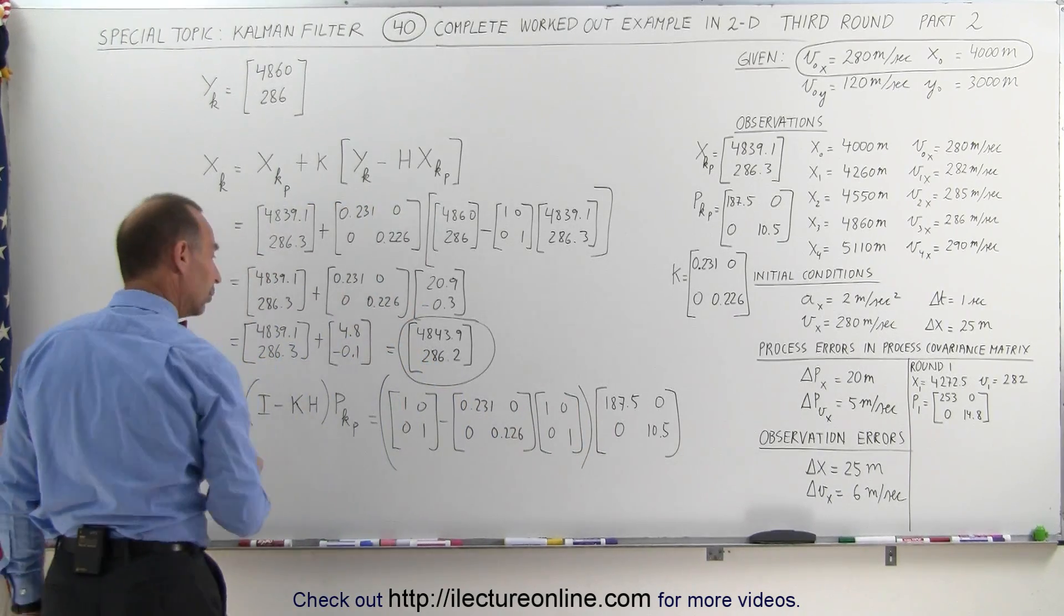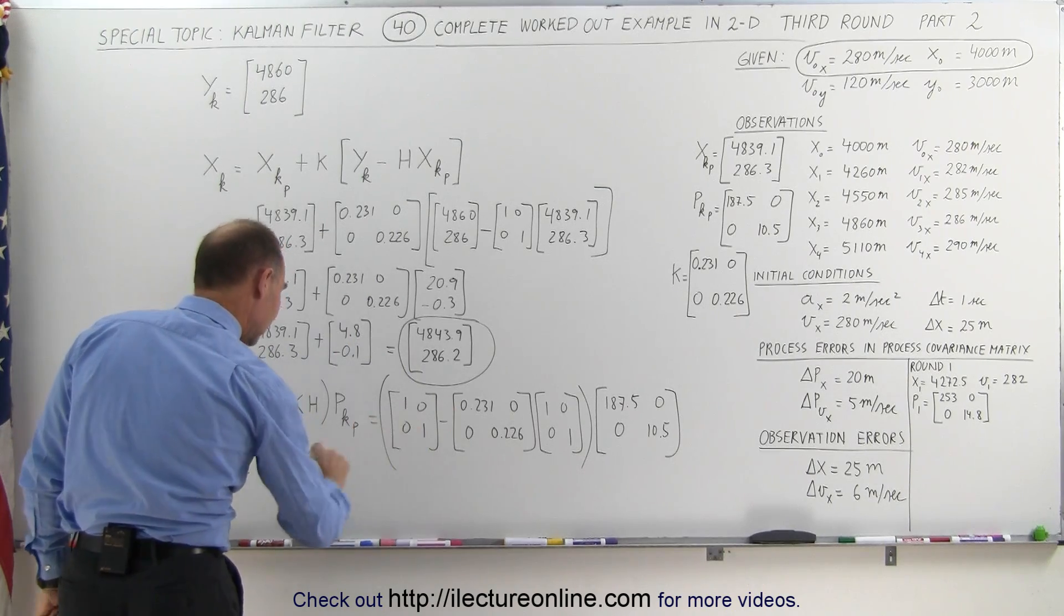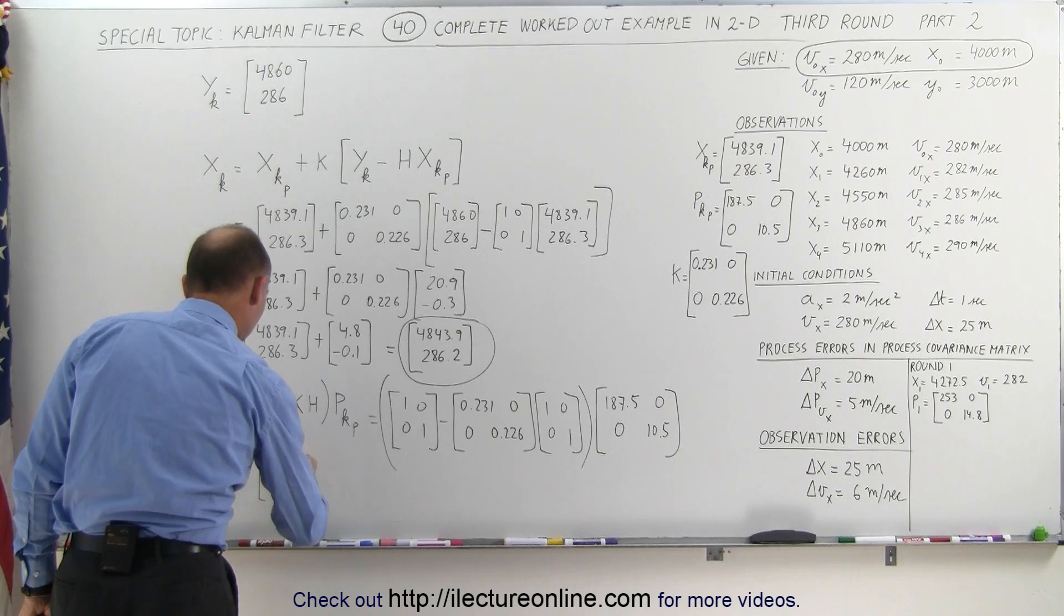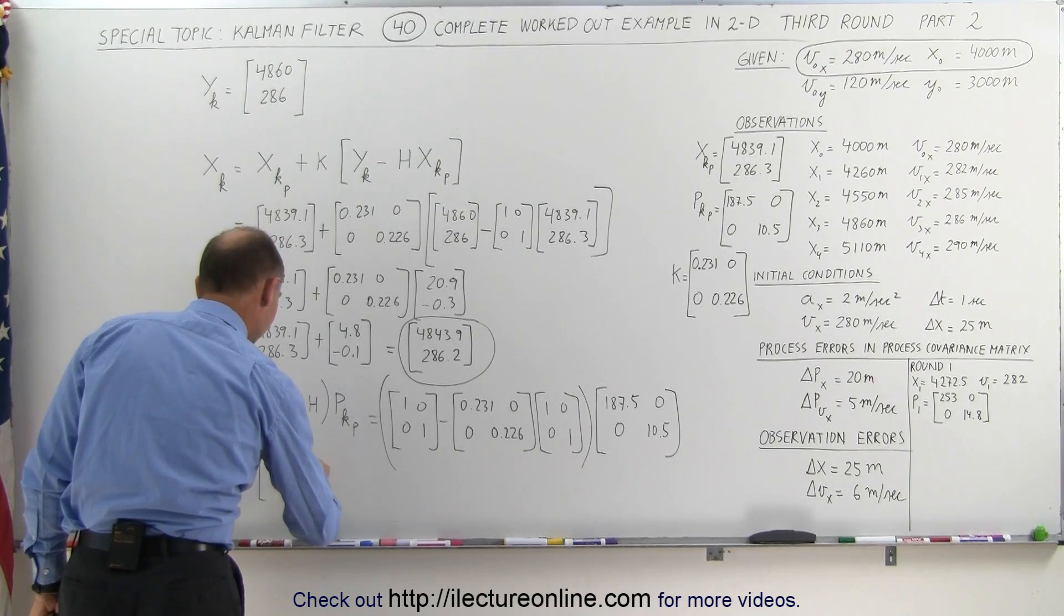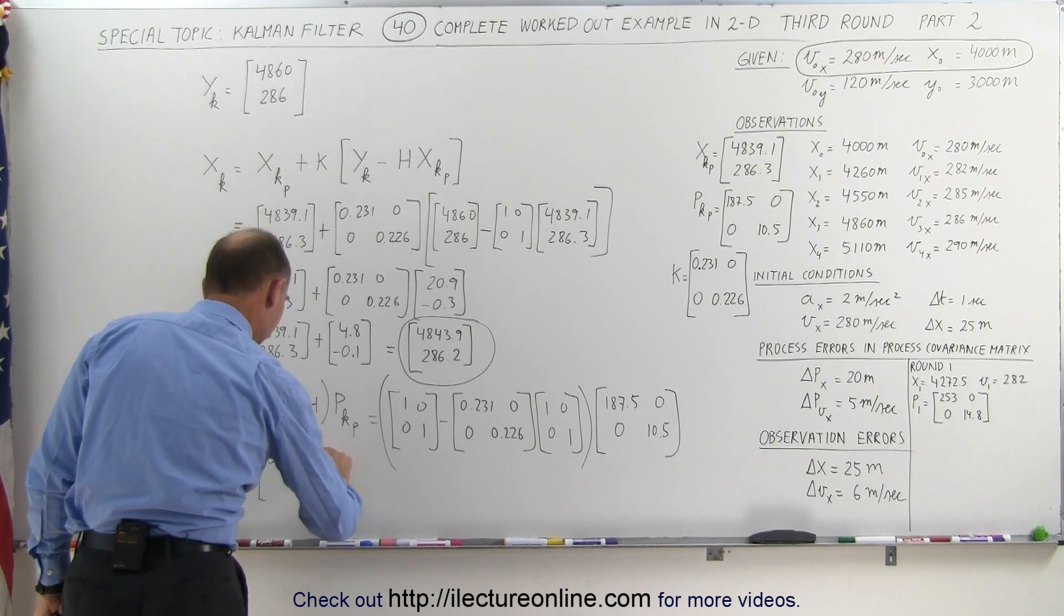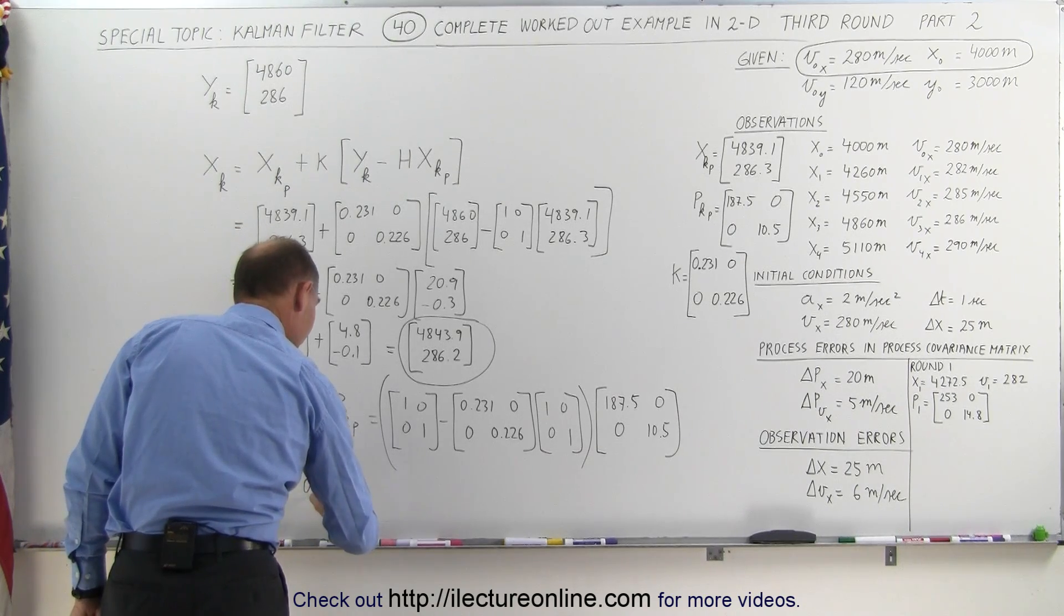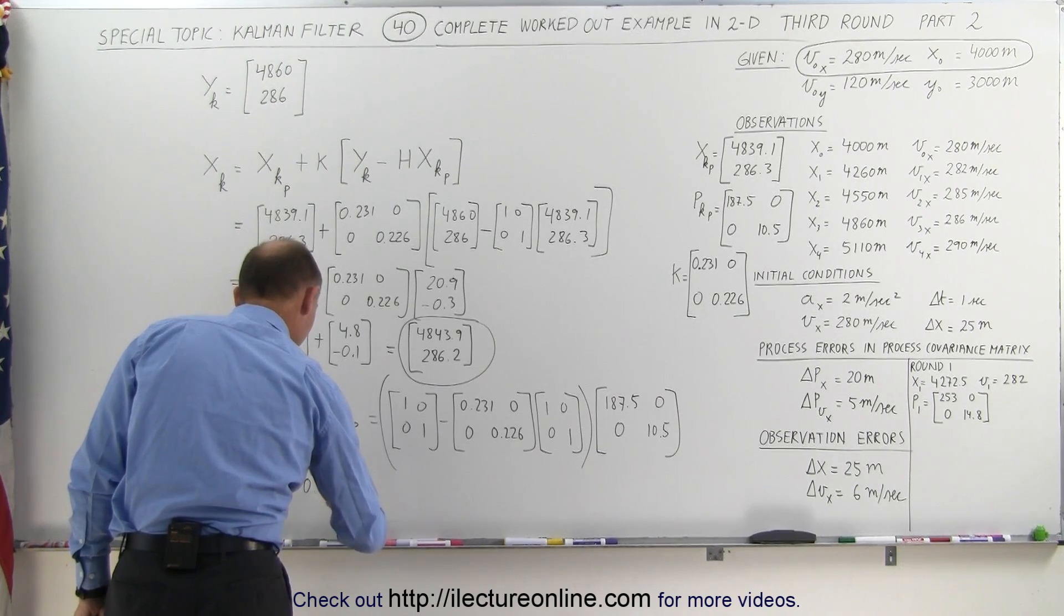So this is equal to 1 minus that, which would be 0.769, 0, 0, and 0.774. I believe that's correct.